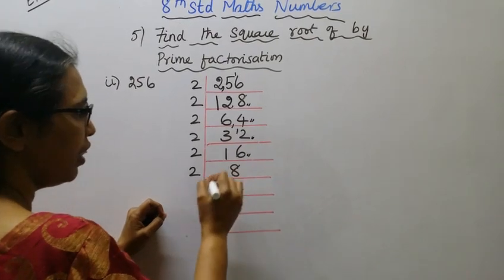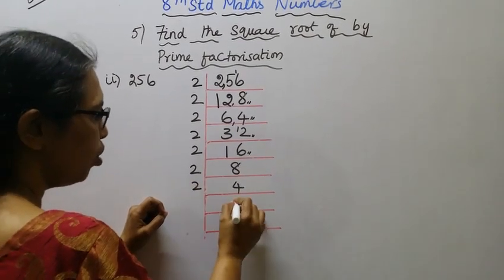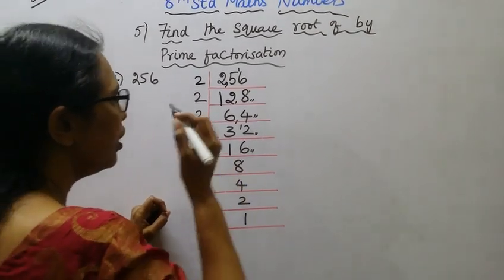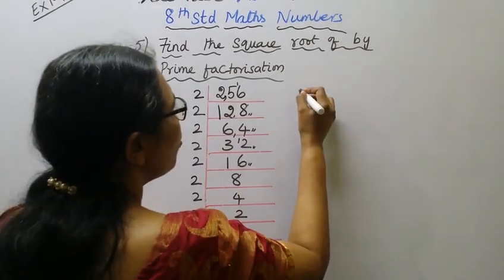Again divide by 2. 2 times 2 is 4, and so on until we complete the factorization.